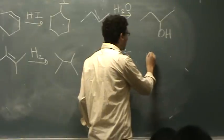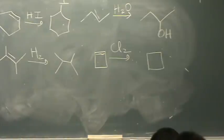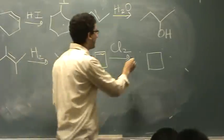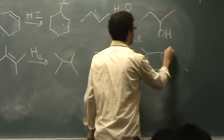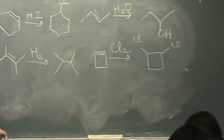For this last one we have a cyclobutene. So we're going to get rid of the double bond. Add a Cl on one side and a Cl on the other side. So this would be a 1,2 dichlorocyclobutane. Does that help?